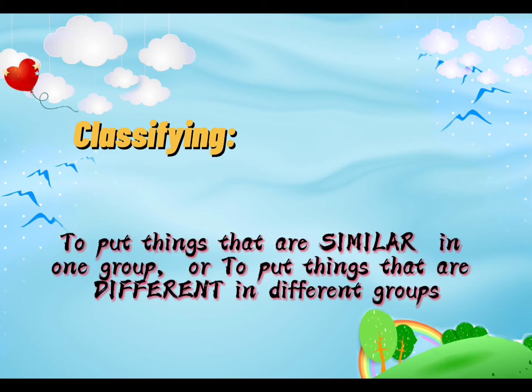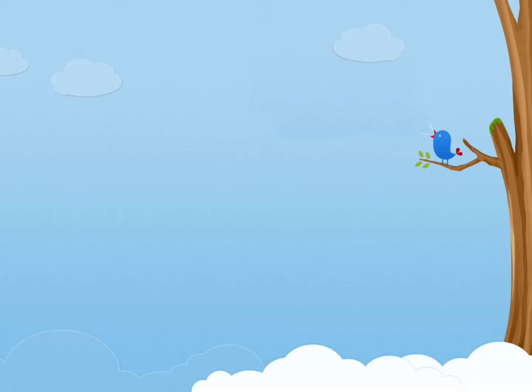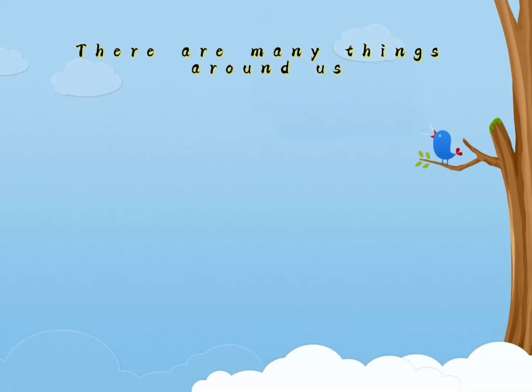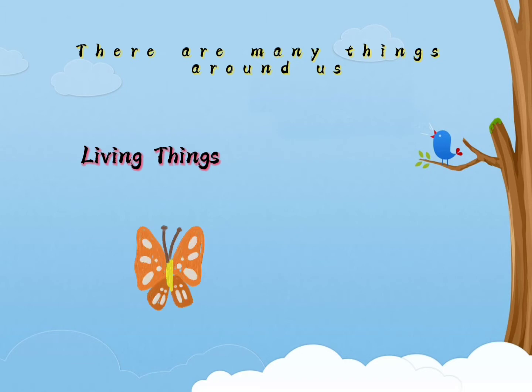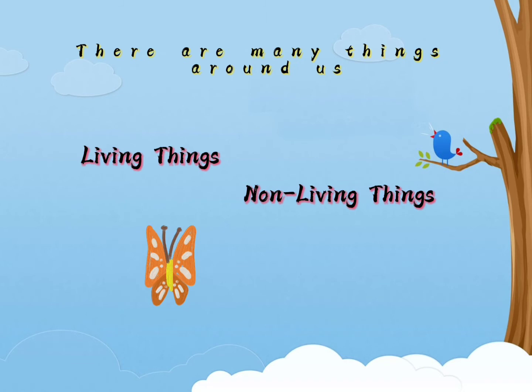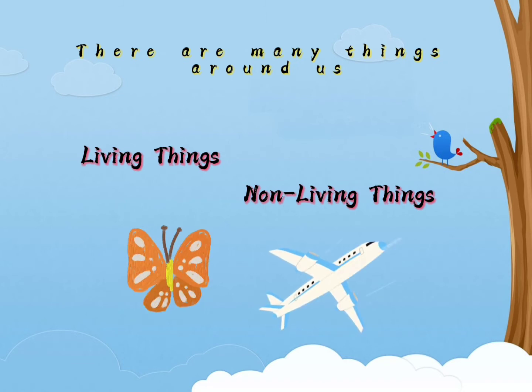So what is the meaning of classifying or sorting? Classifying means to put things that are similar in one group, or to put things that are different in different groups. There are so many things around us — some of these things are living things, like the butterfly, and some are non-living things.